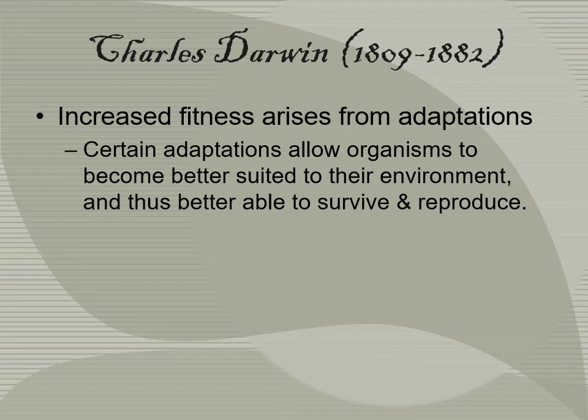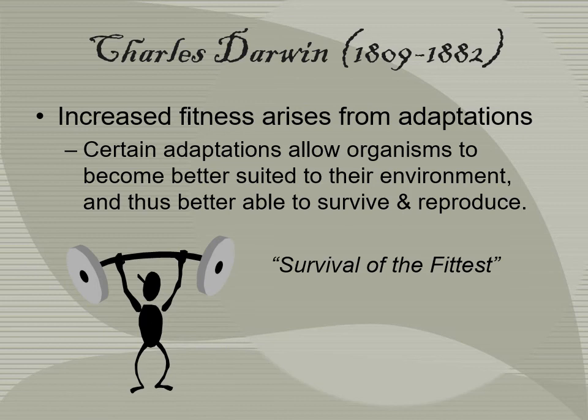Through DNA, a longer-necked giraffe may pass that adaptation to its offspring, leading to more and more giraffes with longer necks. Eventually, the two groups of giraffes may no longer be able to interbreed, leading to speciation — a new species of giraffe. That adaptation allowed them to eat more food and survive better. The biggest point is that the adaptation must be best suited for survival and reproduction; if an organism cannot reproduce, the adaptation will not be passed on. This is also known as survival of the fittest.